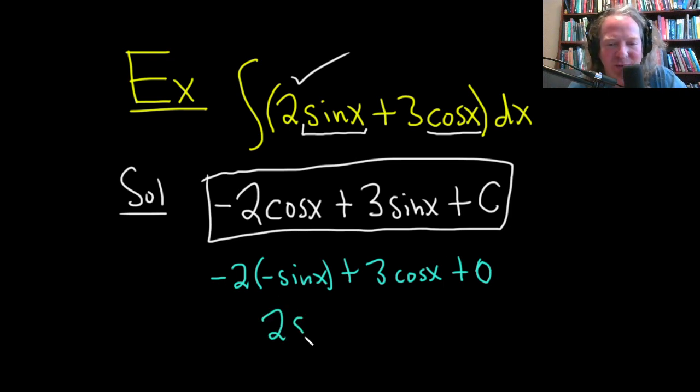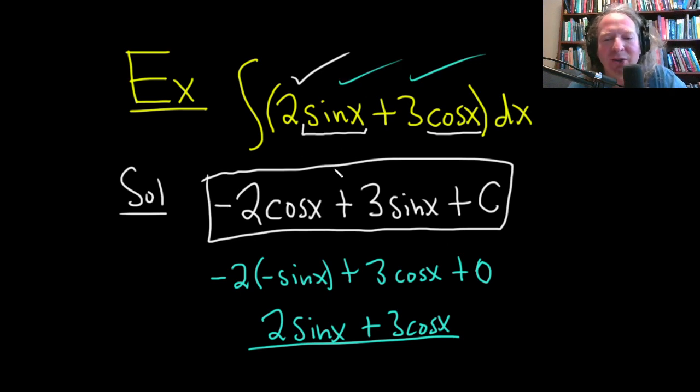Negative and negative is positive. This is 2 sine x plus 3 cosine x. This is exactly what's in the integrand, right? So you can always check your answer by differentiating your result.